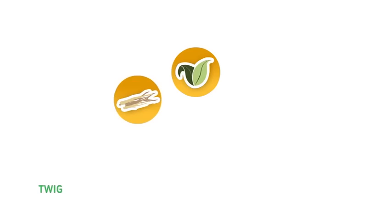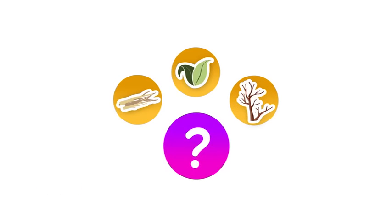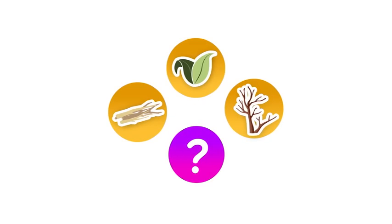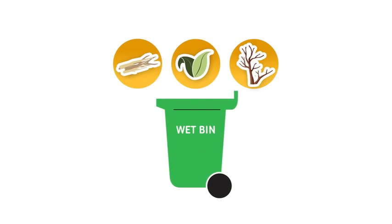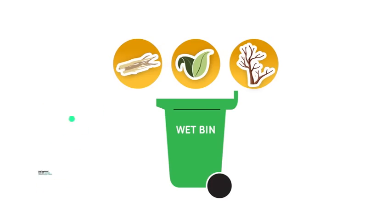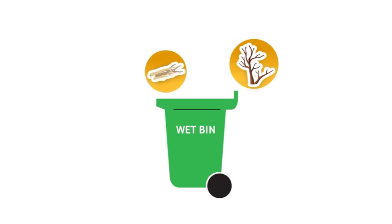What about something like a leaf, or a twig, or branch? Where do these things go? Remember, leaves, twigs and branches all come from nature. Which bin do all natural things go into? That's right. They go into the wet bin. Remember, earthworms can eat leaves and branches and twigs, so they will all go into the wet bin. You guys are doing a fantastic job.